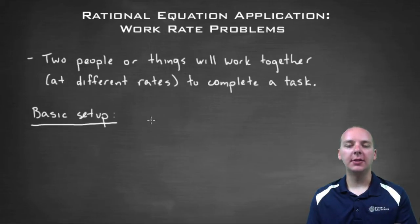A very common application problem that we see a lot when we study rational equations is something called a work rate problem. Basically what happens is you've got somebody or something that can complete a task in a certain amount of time. Maybe they can cut a lawn in an hour, or maybe wash a car in 30 minutes, or maybe a water hose can fill up a swimming pool in 13 hours, or something like that.